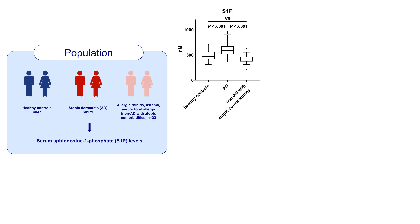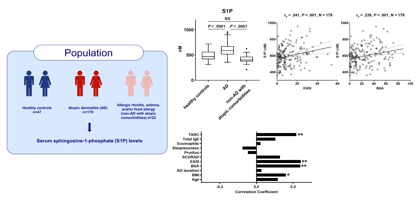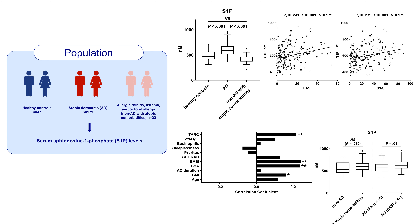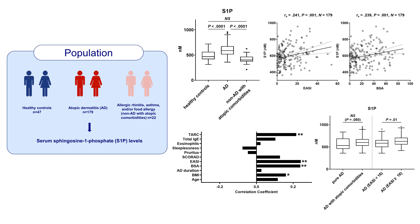In AD patients, serum S1P levels were increased when compared to other groups. Serum S1P levels in AD patients positively correlated with the AD severity scores. Accordingly, moderate to severe AD patients exhibited higher serum S1P levels than mild to moderate AD patients.